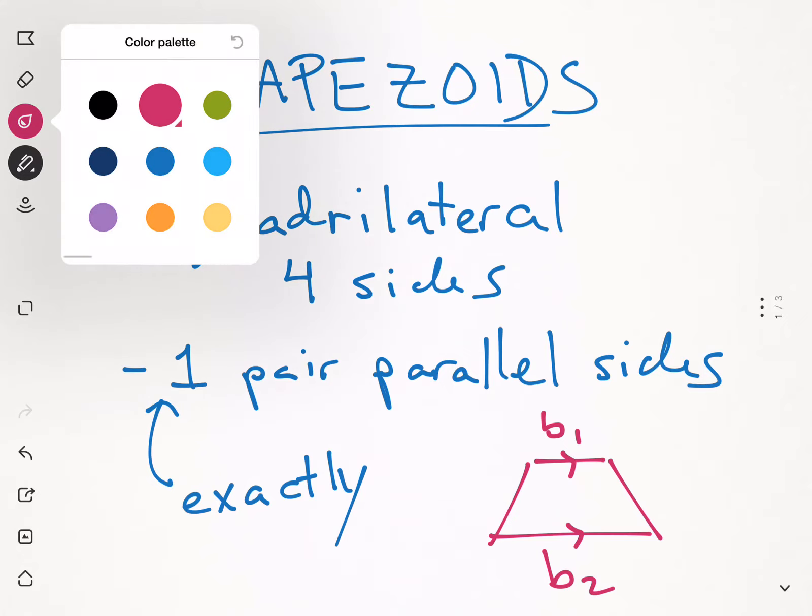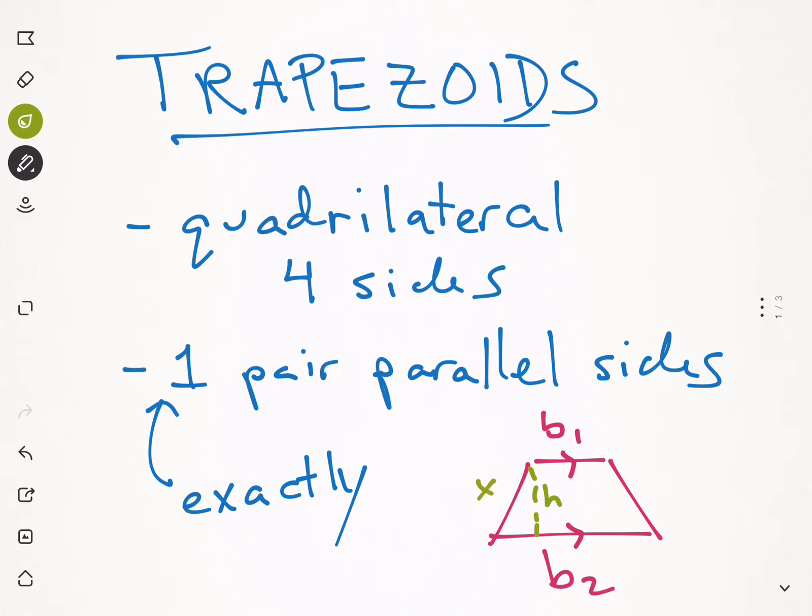Now, like all the other shapes we've been looking at, we also have the height. So usually they will have a height drawn in here. These slanted sides, we are not going to be using those to find the area. So what we're looking at is base one, base two, and the height.